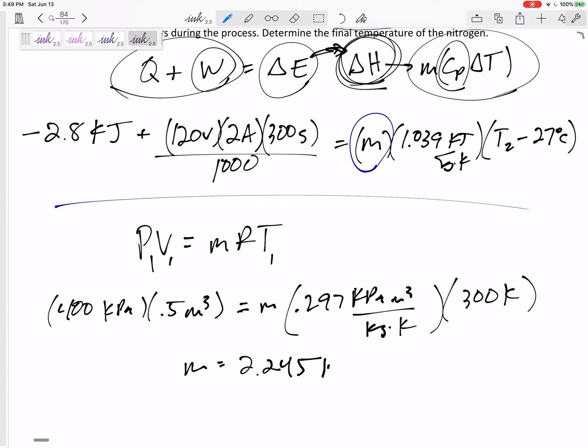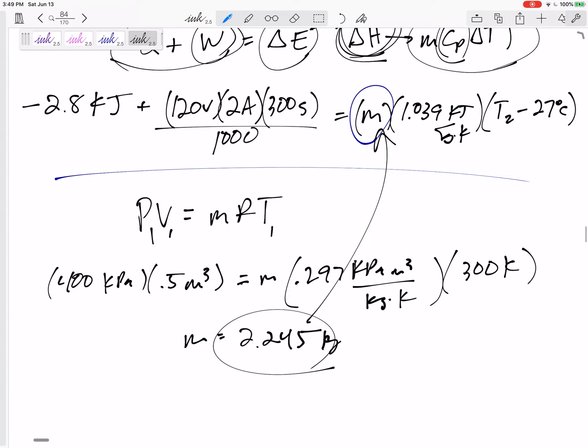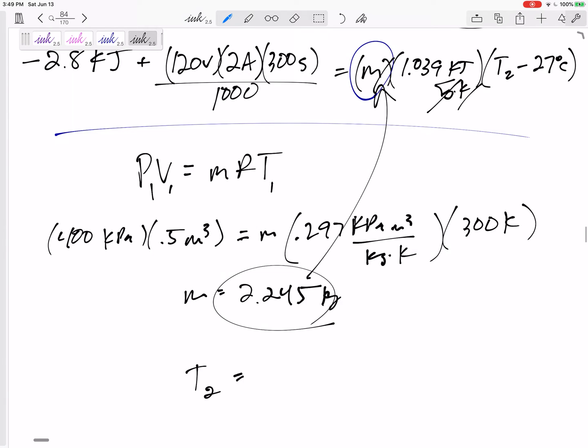Here I would get the mass 2.245 kilograms. Then I can plug it right there. All the units work out to be kilojoules on the right hand side, kilojoules on the left hand side. I would get T2 = 56.7 degrees C.